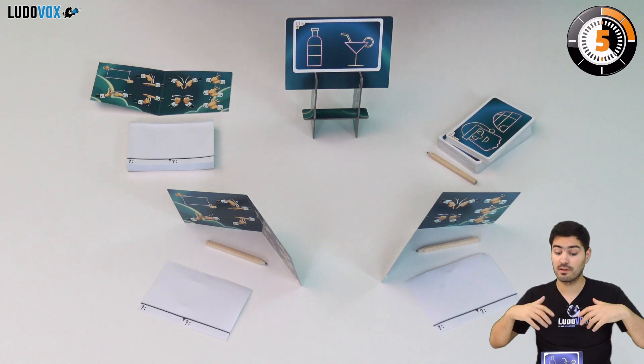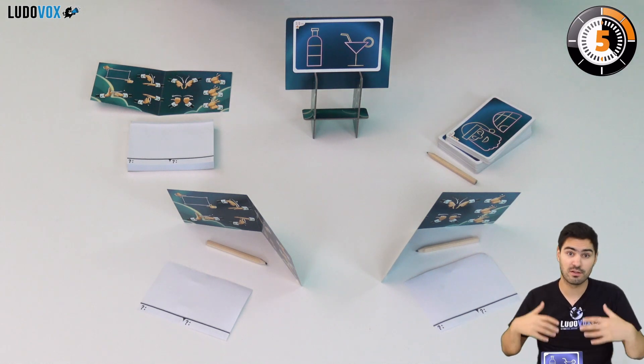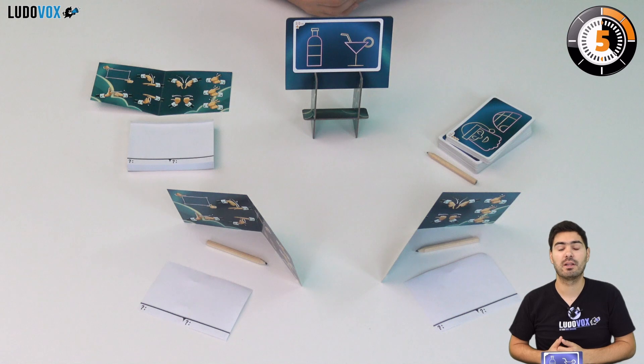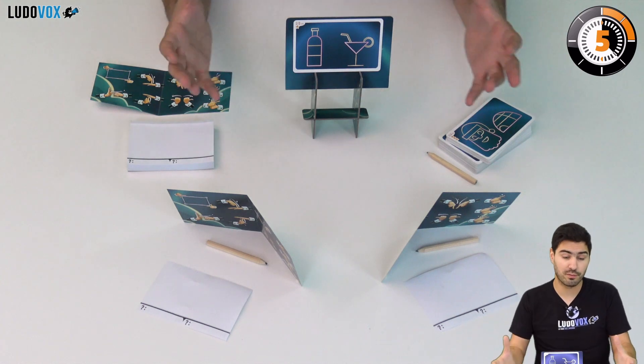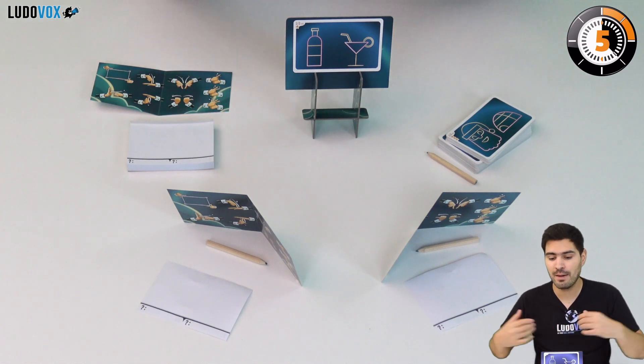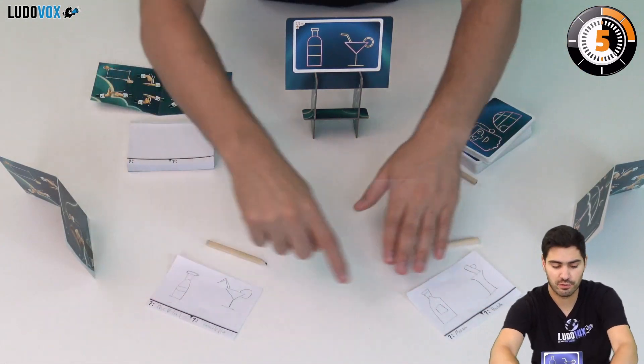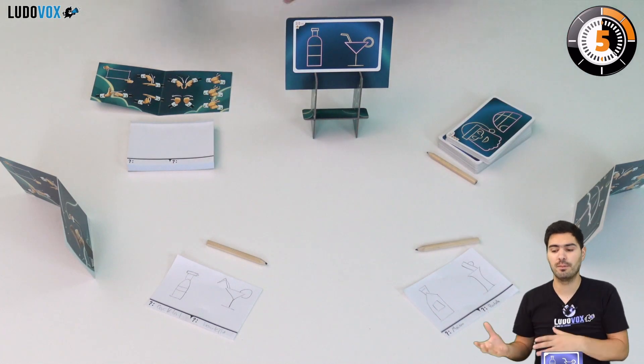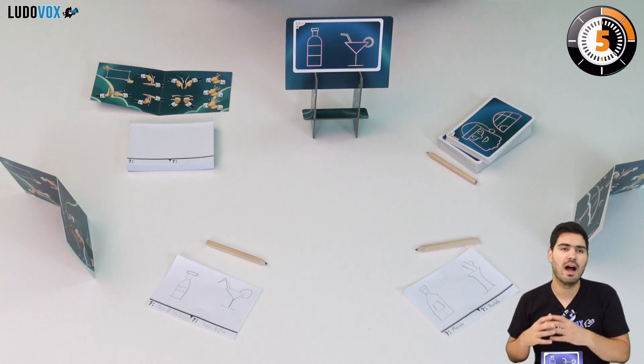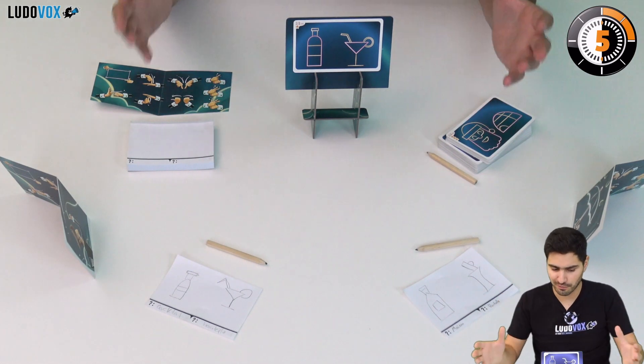Once the maestro is done doing their performance, the players should have two beautiful drawings and they should name them. So they should write what they just drew, two elements that they can pinpoint as the center points of the performance.